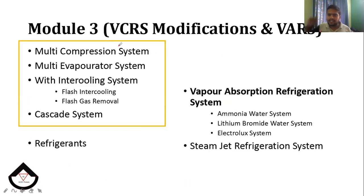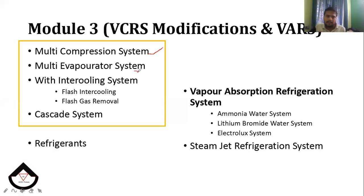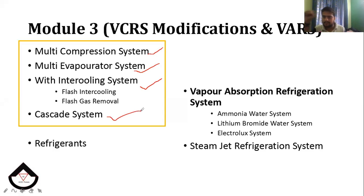Module 3 is the Multi-Compression System, Multi-Evaporator System with inter-cooling, and the cascade system. We are discussing the VCRS — Vapor Compression Refrigeration System — across these configurations.